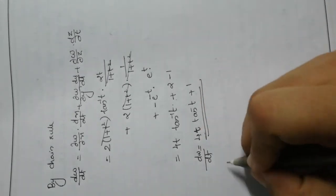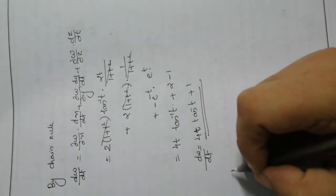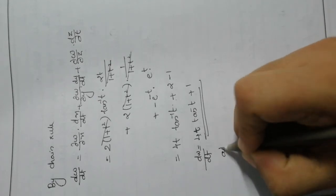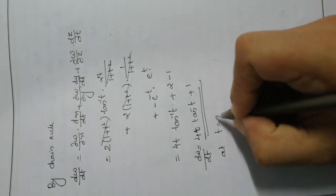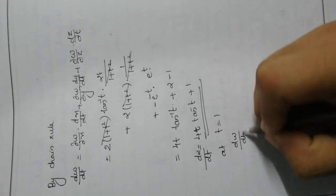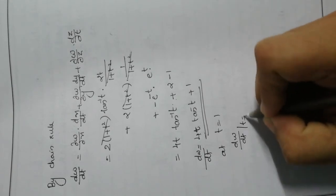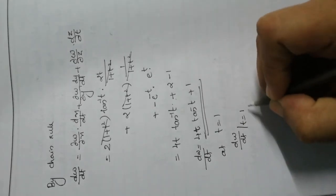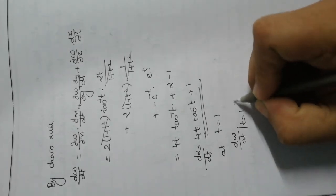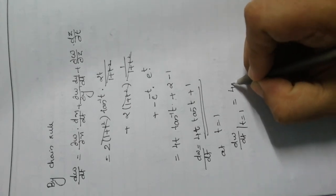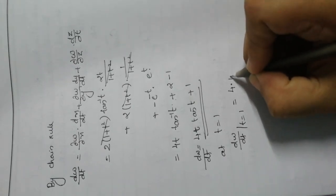Now we find the derivative's value at t = 1. At t = 1: dw/dt = 4(1)·tan⁻¹(1) + 1 = 4·(π/4) + 1 = π + 1.